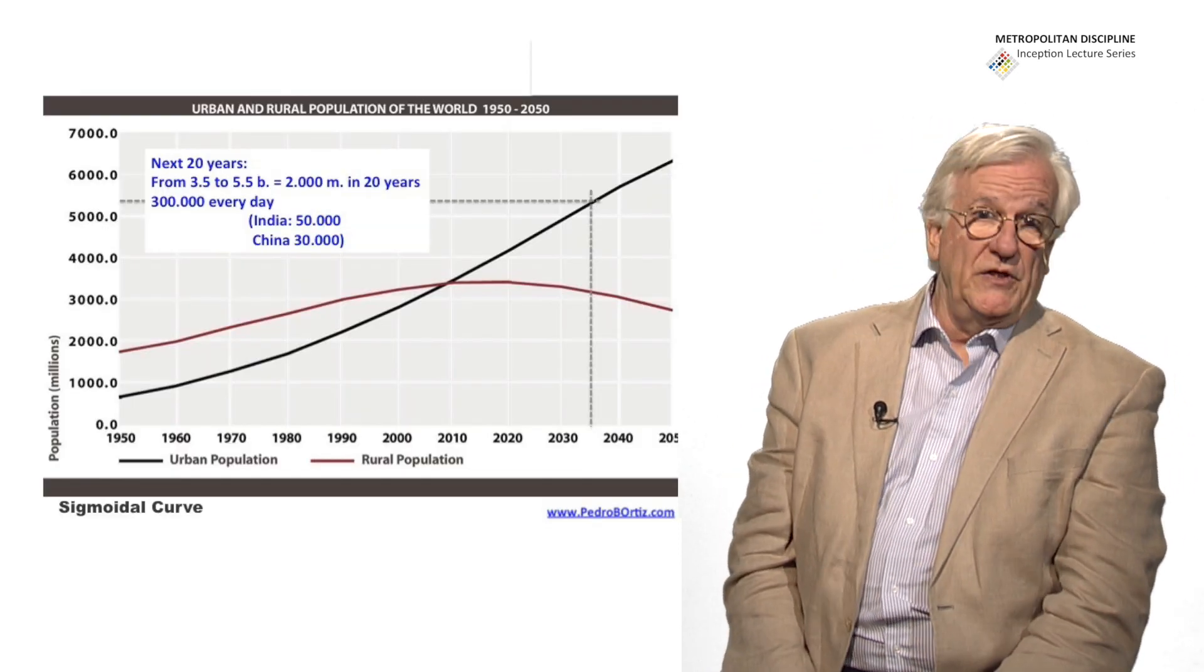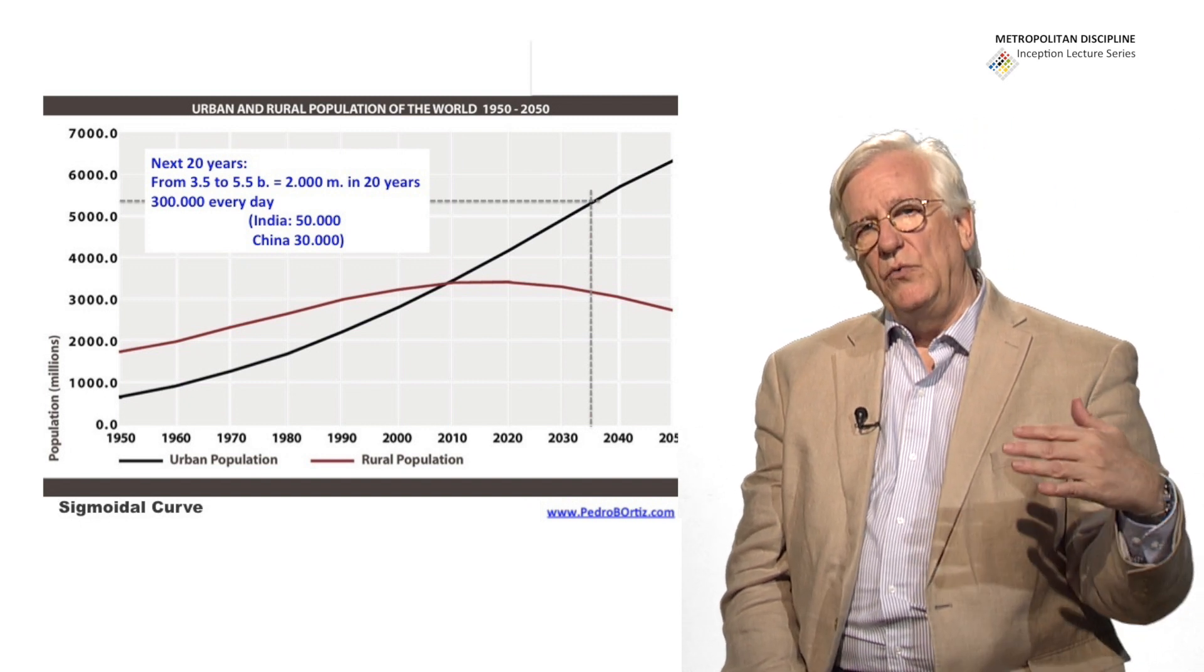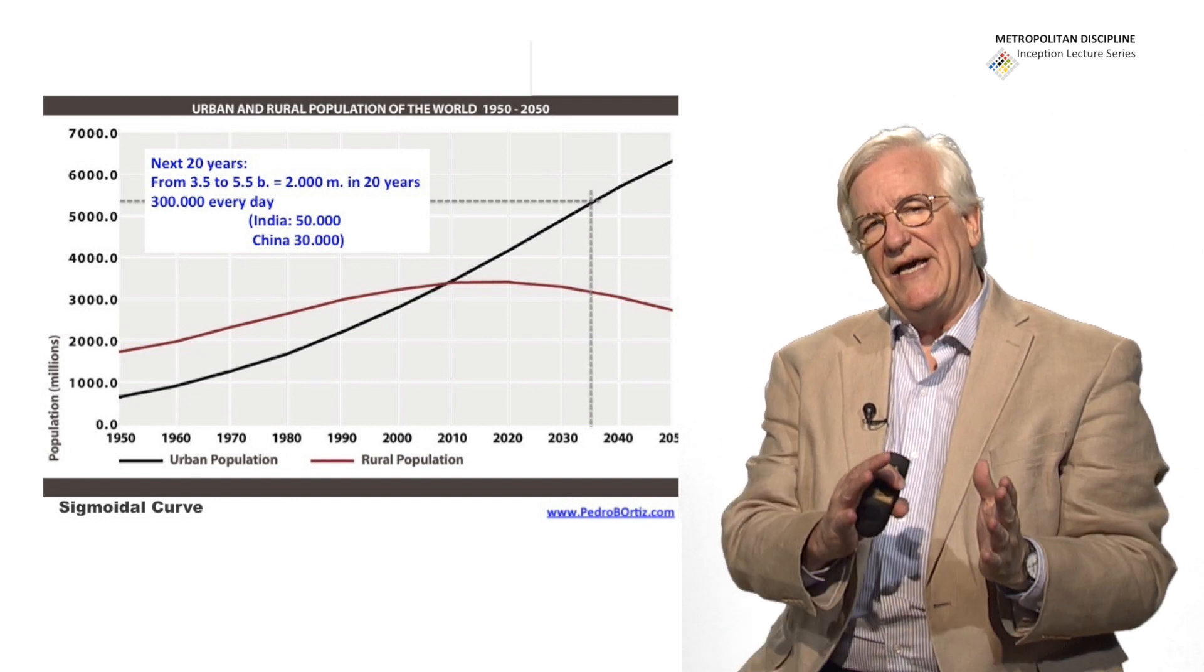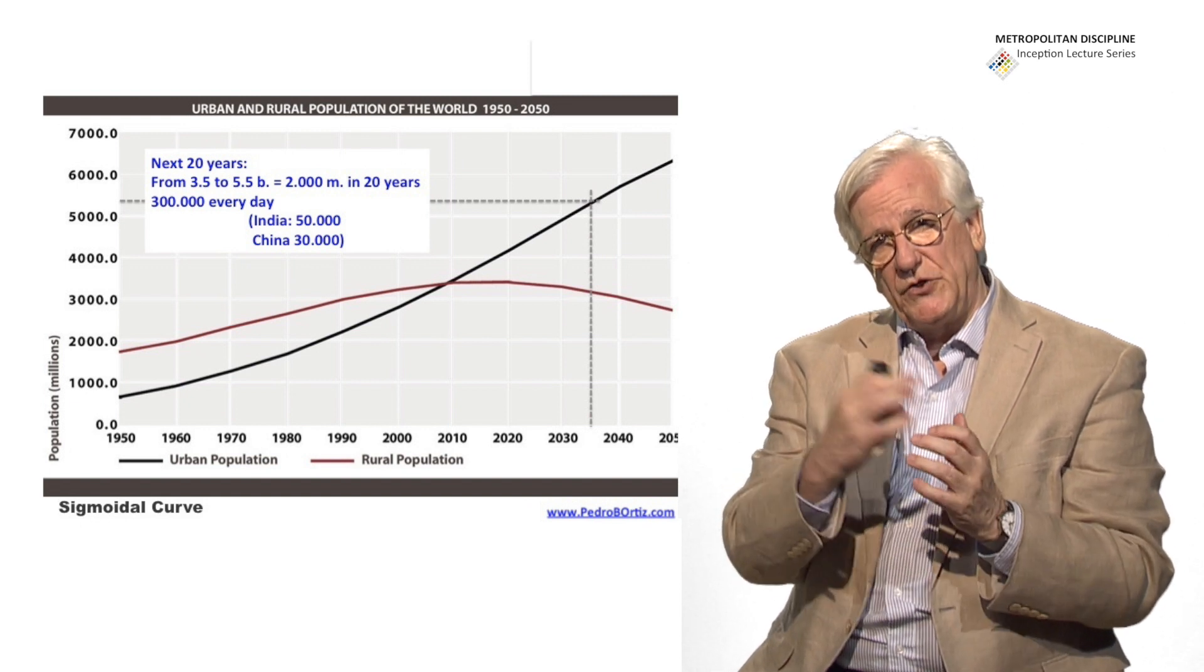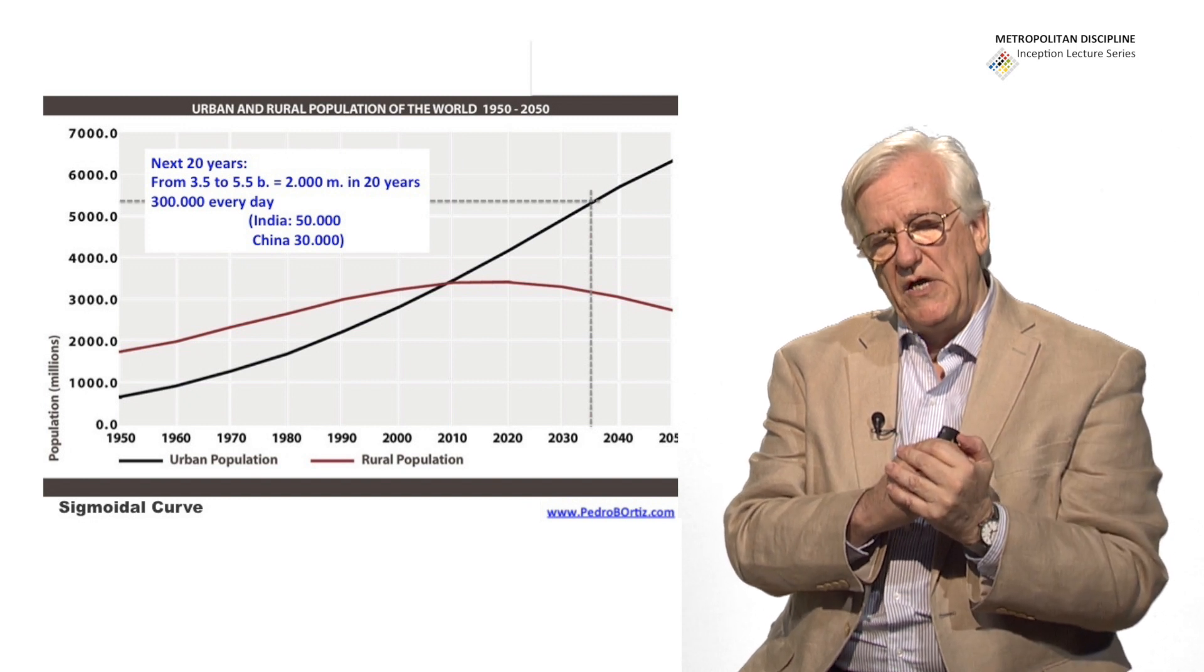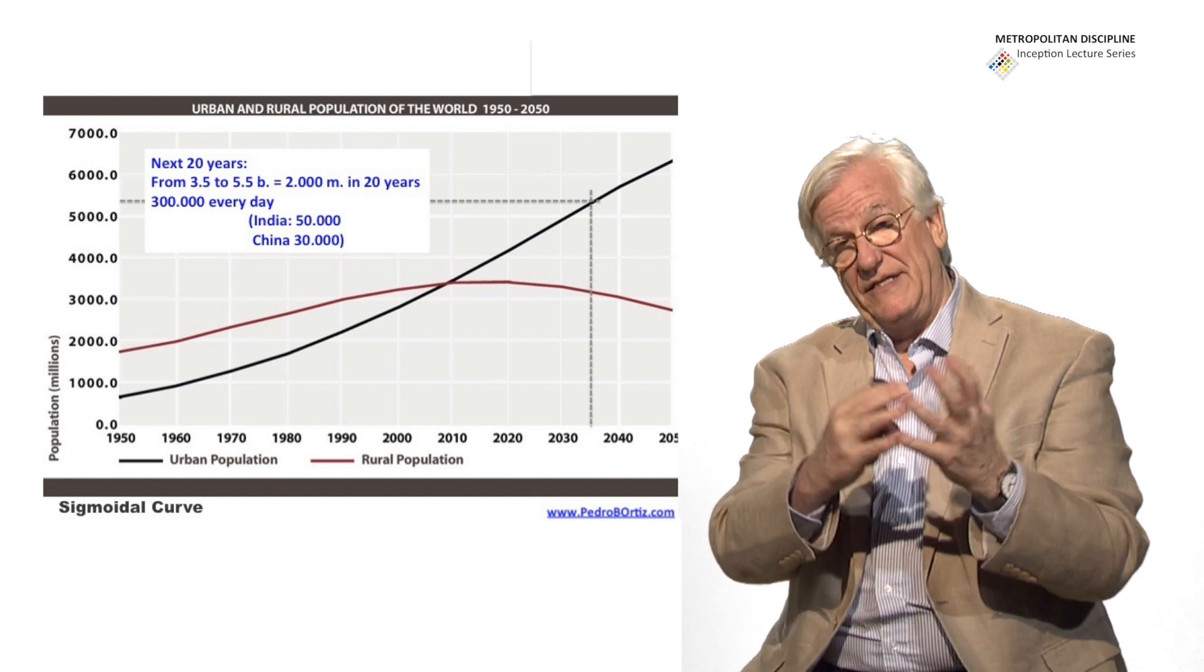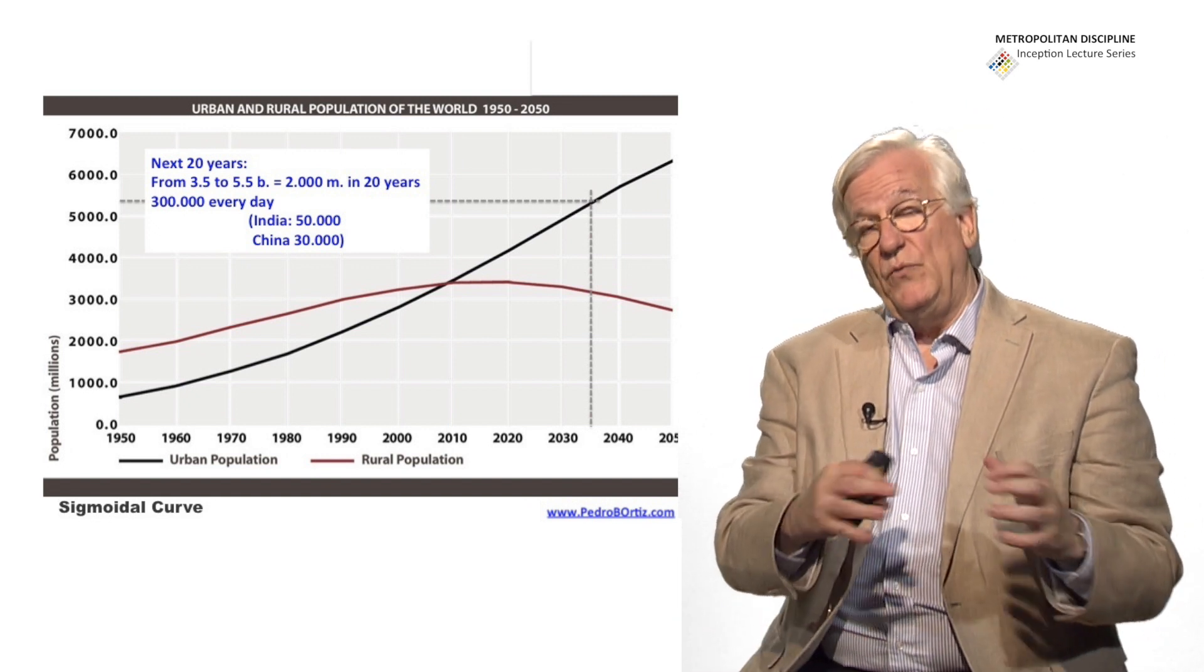We saw in the first of the presentations how the world is moving from rural to urban, and it was in 2010 that we had this equilibrium between 50% of the world population living in rural areas and 50% living in urban areas. But that is growing very fast at the rate of 300,000 people every day. That means a metropolis of 2 million people every week. And we are not coping with that.